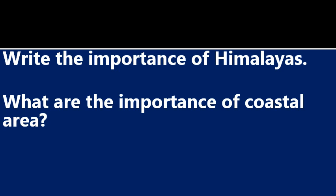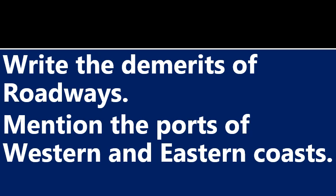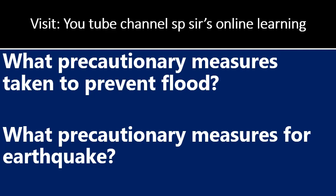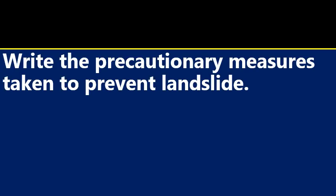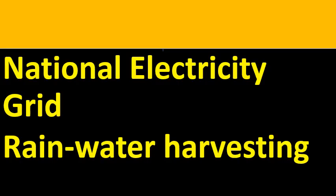Write the importance of the Himalayas, the importance of the coastal area, and the importance of the Peninsula Plateau. Write the importance of roadways. Mention the ports of the Eastern and Western coasts separately — you need to list and locate them on a map. What precautionary measures are taken to prevent floods and earthquakes? Write the precautionary measures taken to prevent landslides, and learn about coastal erosion. Also learn about the National Electricity Grid and its function, and the importance of rainwater harvesting.